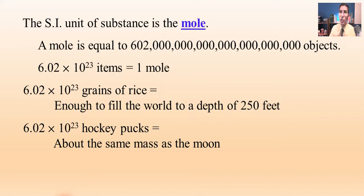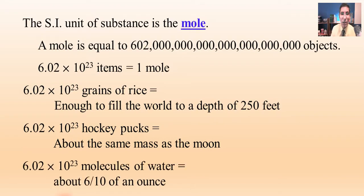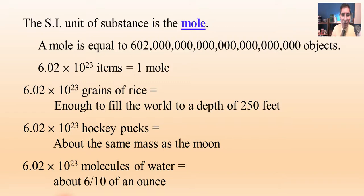You might be wondering why we use such a huge number — it almost seems unreasonable. Well, that's because if we have 6.02 times 10 to the 23rd molecules of water, that's about six-tenths of an ounce, or about 18 milliliters of water — a very small amount, not even enough to quench your thirst. Hopefully this helps us appreciate how large Avogadro's number is, and at the same time, how incredibly tiny atoms and molecules are.